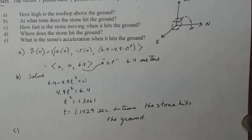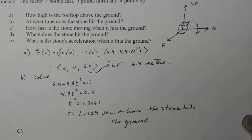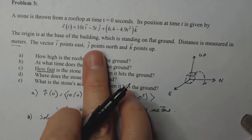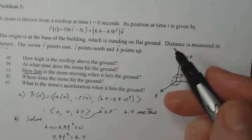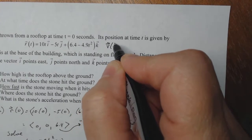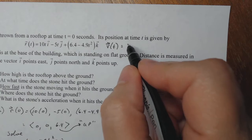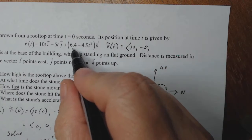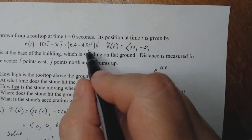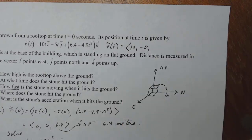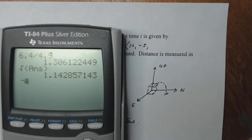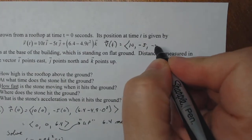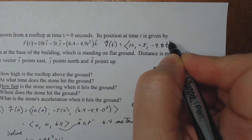Now letter c, how fast is the stone moving when it hits the ground? So the two words here, how fast implies velocity. So that means that if this is r, then v of t is going to be the derivative of each of these pieces. V of t is equal to, the derivative of 10 t is 10, the derivative of minus 5 t is minus 5, and the derivative of 6.4 minus 4.9 t squared with respect to t is minus 9.8 t. That's velocity.